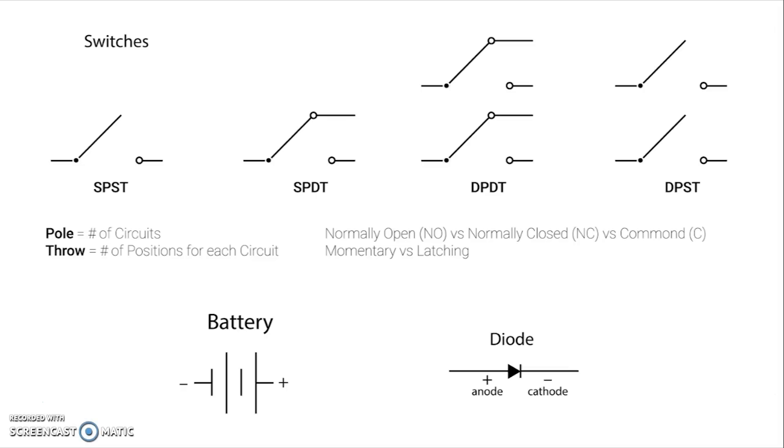This stands for single pole single throw or double pole double throw, and I've always thought of this as sort of input output because they always do it in that order, pole and then throw. So the number of poles is the number of inputs, essentially how many circuits coming into the switch, and then the number of throws is how many circuits can come out of each one of those poles. So then the number of throws is relative to the number of poles.